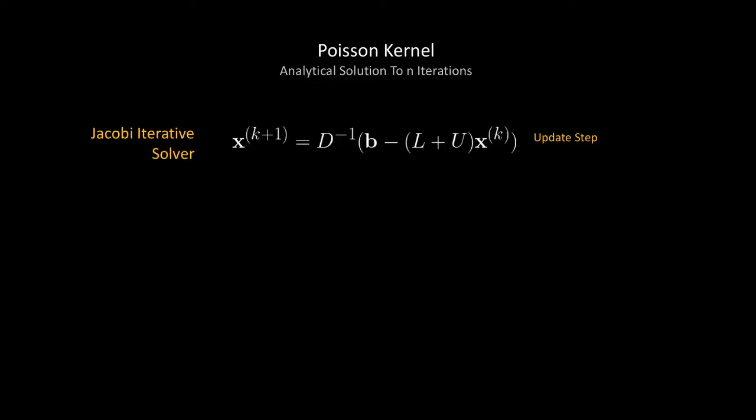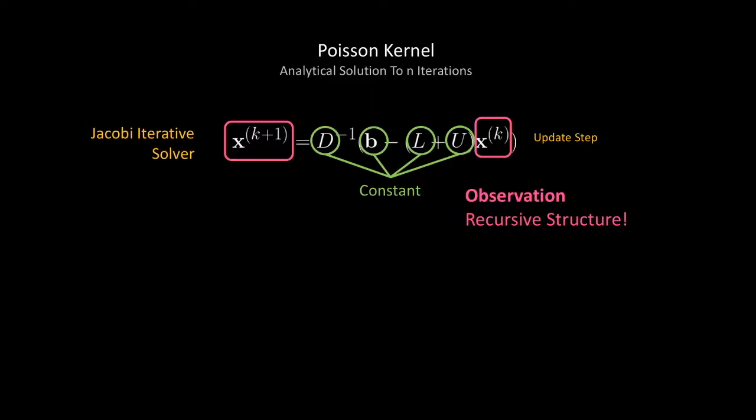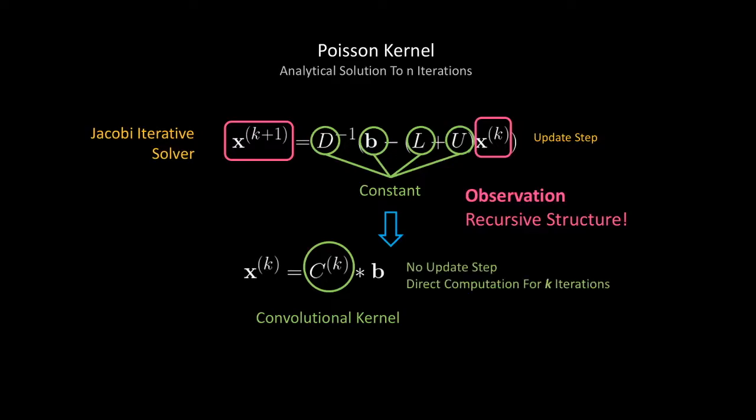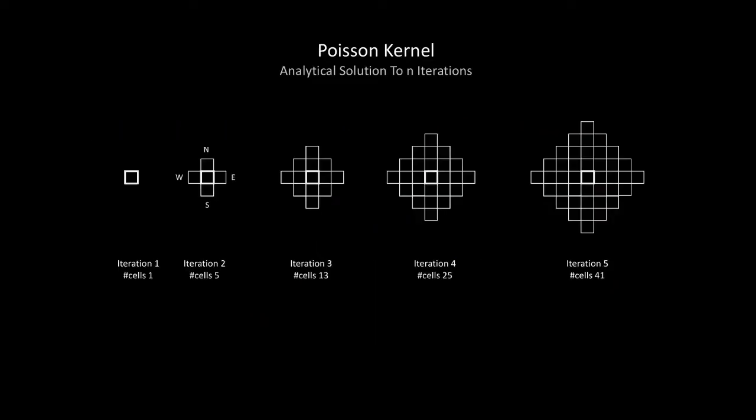If you look closely at the update step, you would notice a recursive structure where x k plus 1 always depends on its previous value, while everything else remains constant. So we can analytically compute the convolutional kernel that exactly matches the target Jacobi iteration. This effectively replaces the iterative solver with one-time convolution. If you visualize Jacobi iterations, you would see as the iteration goes up, the central cell gets more and more information from farther cells and therefore our kernel grows in space.